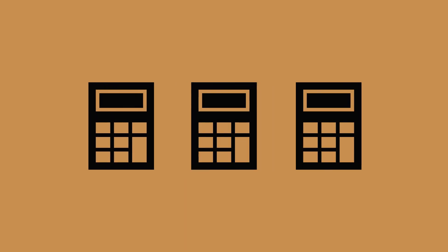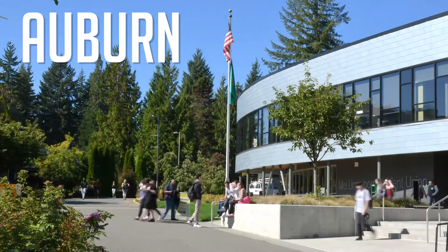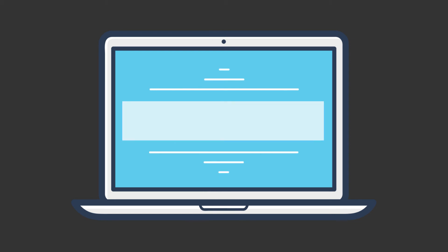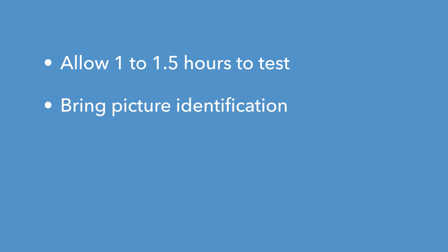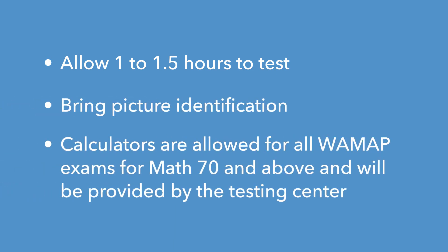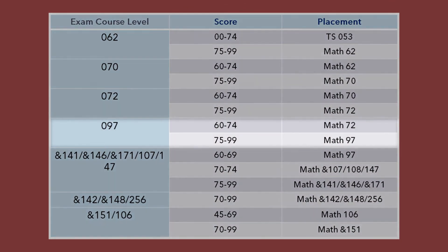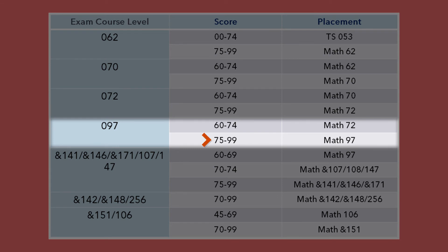You can take the actual entrance exam at any of our three campuses: Auburn, Kent, or Enumclaw. For more information or hours of operation, go to www.greenriver.edu/testing. Allow one to one and a half hours to test. Be sure to bring picture ID. Calculators are allowed for all WAMAP exams for Math 70 and above and will be provided by the testing center. Your entrance exam score will determine your placement. For example, with a score of 75 to 99 on the Math 97 exam, you will be able to register for Math 97.